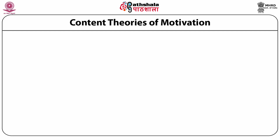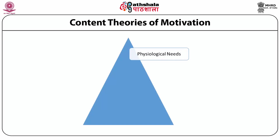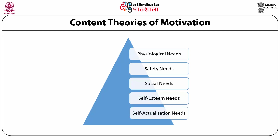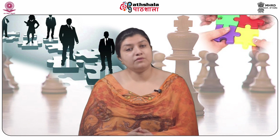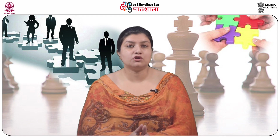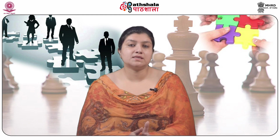The first level of Maslow's hierarchy is physiological needs, followed by safety needs, social needs, self-esteem needs, and self-actualization needs. Physiological needs include the most basic and obvious needs for survival of human beings. These are the most powerful needs which motivate an individual until they are satisfied.